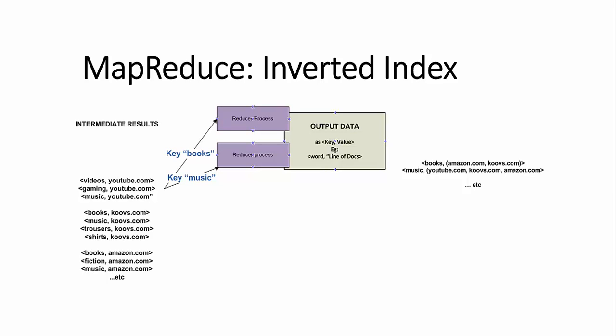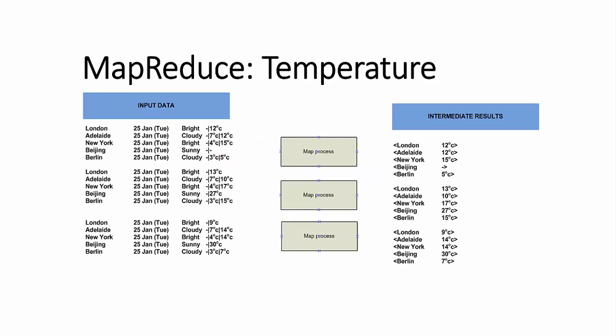Finally, let's look at a third example of temperature data for some of the major cities across the world. The temperature data consists of a city, date, some text, and a minimum and maximum temperature. We'd like to find out the maximum temperature over a given date range for a particular city.